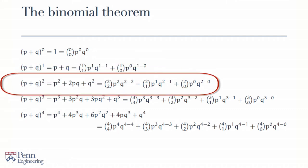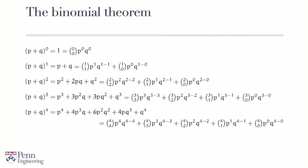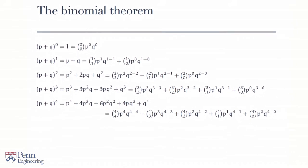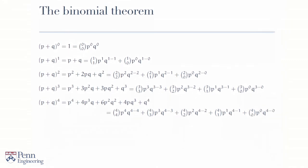p plus q to the power 2 is given by another binomial expansion: 2 choose 2 times p squared times q to the power 0, plus 2 choose 1 times p times q, plus 2 choose 0 times p to the power 0 times q squared. You could do something similar for each of the expansions on the screen. A general pattern is becoming visible, and this is the content of the binomial theorem.